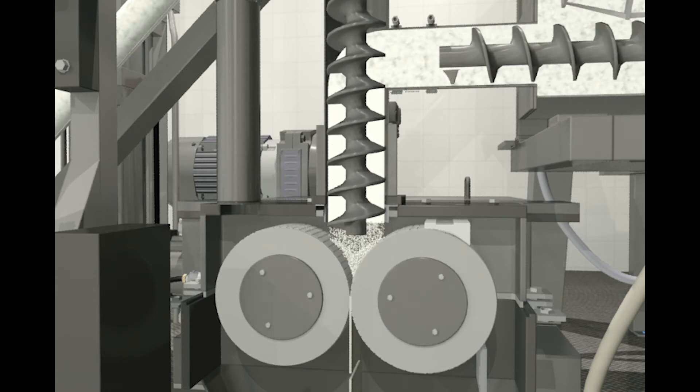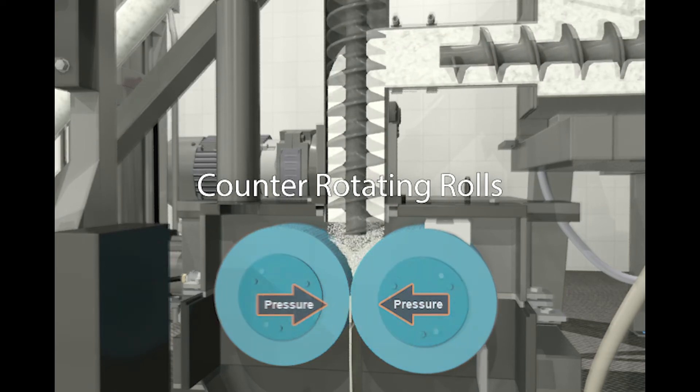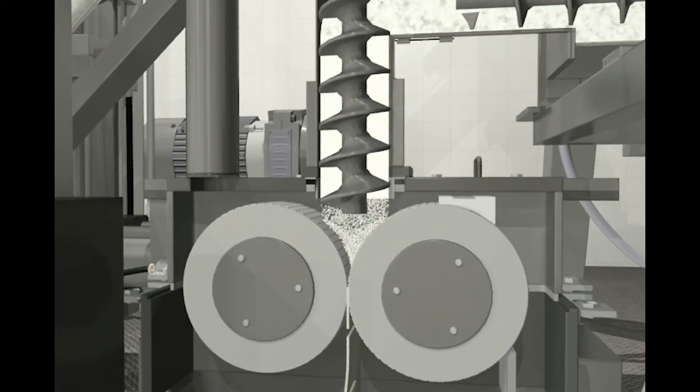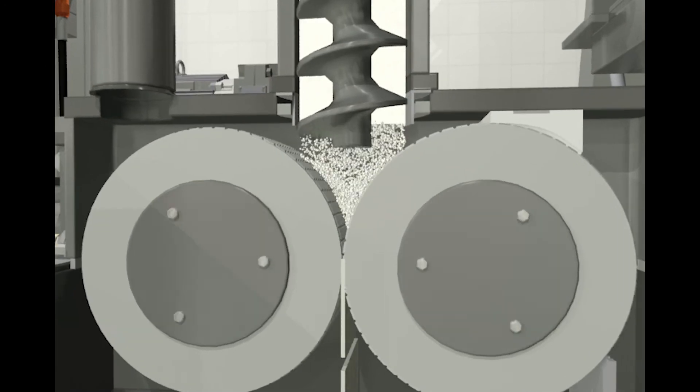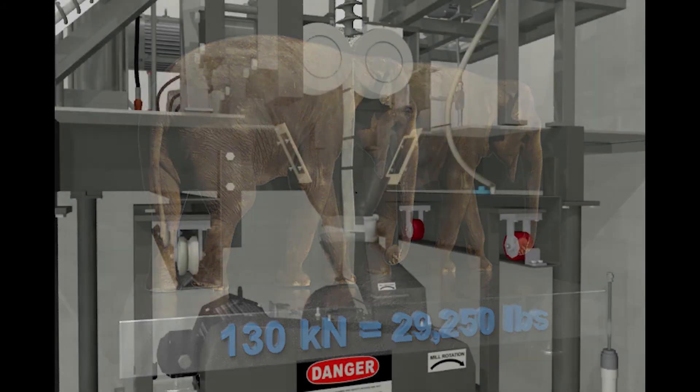The main compaction of the product occurs between two counter-rotating rolls which act under pressure from a hydraulic cylinder, the force of which is applied to the floating roll. Maximum operating pressure is typically 130 kilonewton total force.